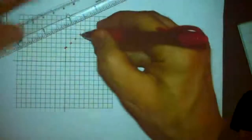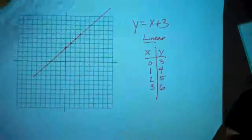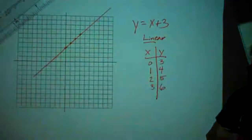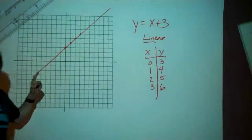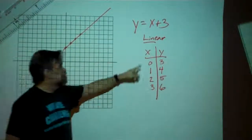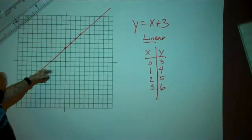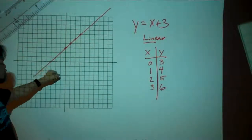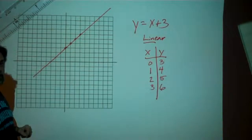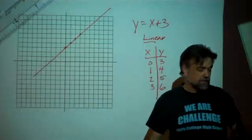If I grab a straight edge here and put it down, I can draw a nice line. And this is the line y equals x plus 3. Every single point on this line has the characteristic that when you add 3 to the x-coordinate, you get the y-coordinate. For example, this point right here — the x-coordinate is negative 4, the y-coordinate is negative 1. Sure enough, negative 4 plus 3 equals negative 1. So that is the line y equals x plus 3.